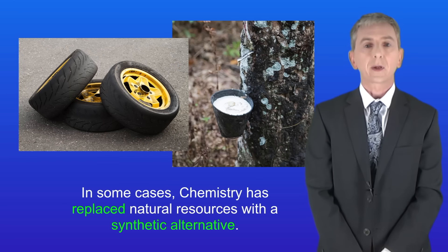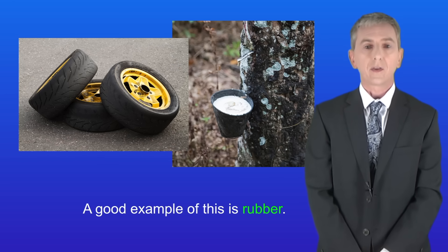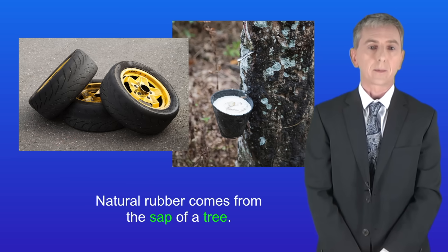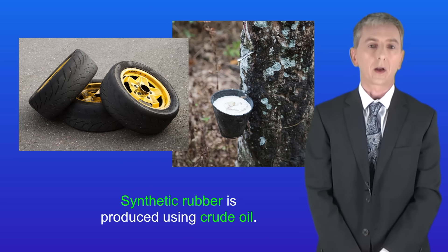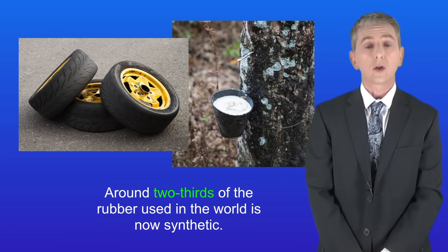In some cases chemistry has replaced natural resources with a synthetic alternative. A good example of this is rubber. Natural rubber comes from the sap of a tree. However synthetic rubber is produced using crude oil and around two-thirds of the rubber used in the world is now synthetic.